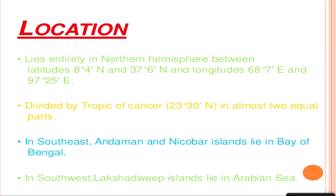India entirely lies in the northern hemisphere from 8 degrees 4 minutes north to 37 degrees 6 minutes north. Its longitudinal extent is 68 degrees 7 minutes east to 97 degrees 25 minutes east. The Tropic of Cancer divides India into two equal halves. The Tropic of Cancer is the 23 degrees 30 minutes north latitude line, dividing India into two parts: the tropical region to the south and the subtropical region to the north. In the southeast, the Andaman and Nicobar Islands lie in the Bay of Bengal, and in the southwest, the Lakshadweep Island group lies in the Arabian Sea.